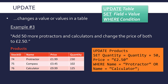I'll do: UPDATE products, then SET quantity to quantity plus 50 — a bit like programming with a variable, we're setting the new value of quantity to be the old value plus 50. This is better because it doesn't matter what the current value is. Because I'm also setting price to £2.50, I add a comma then price equals '2.50' in quotes. For multiple values, just separate them with a comma. Then WHERE name equals 'protractor' OR name equals 'calculator'.